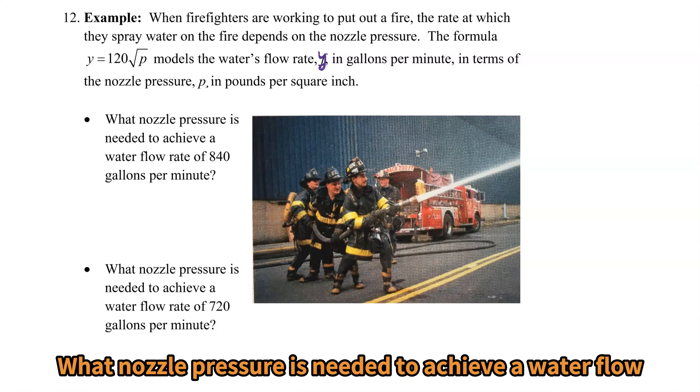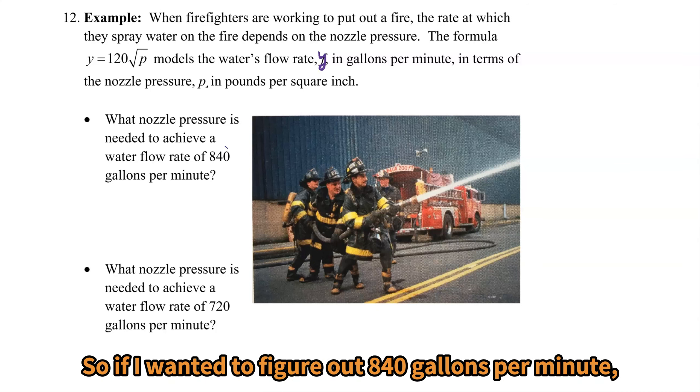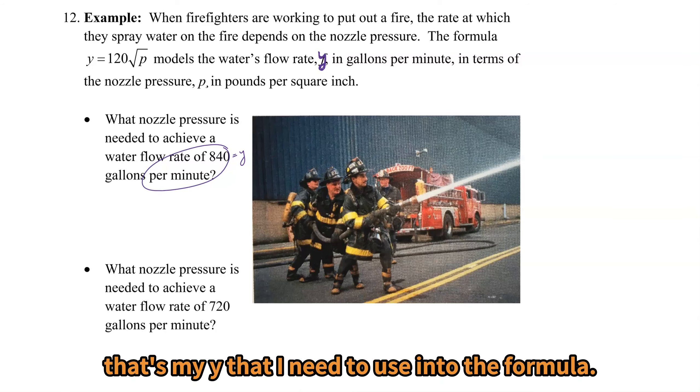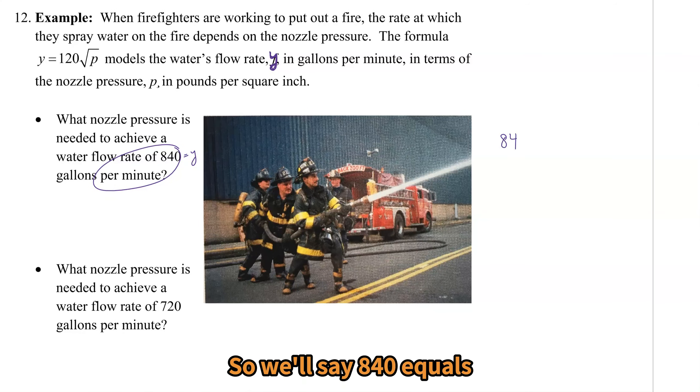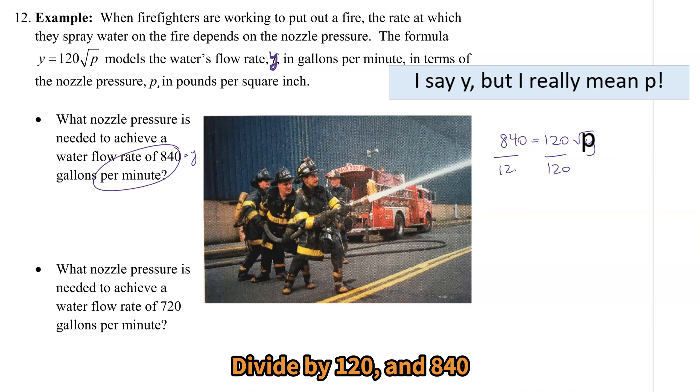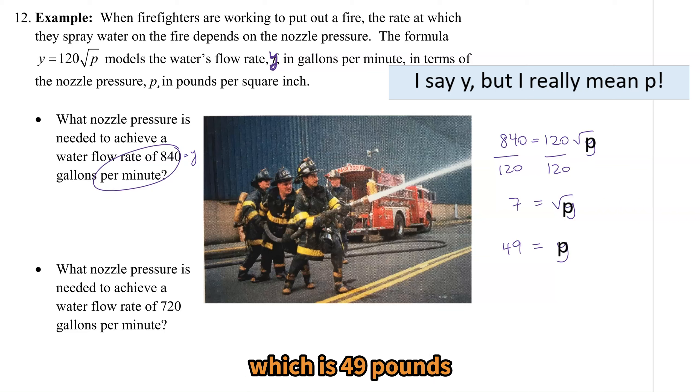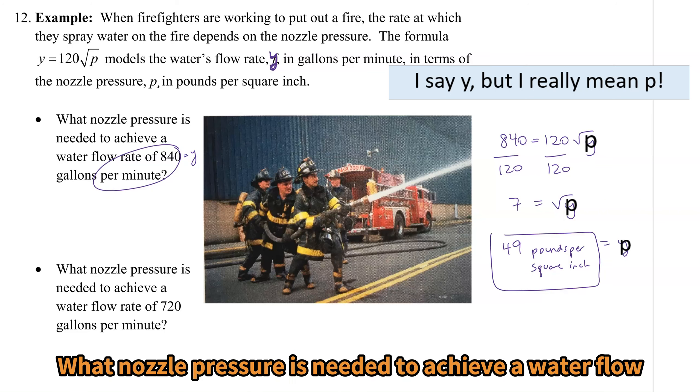What nozzle pressure is needed to achieve a water flow rate of 840 gallons per minute? So if I wanted to figure out 840 gallons per minute, that's my y that I need to use into the formula. So we'll say 840 equals 120 square root p and solve for p. Divide by 120 and 840 divided by 120 will give us 7. 7 is the square root of p, so p is going to be 7 squared, which is 49 pounds per square inch.